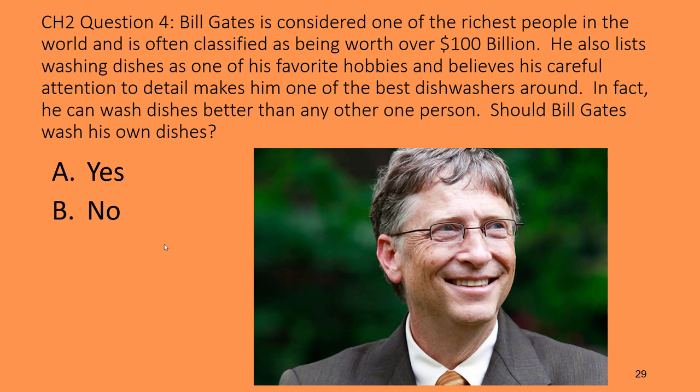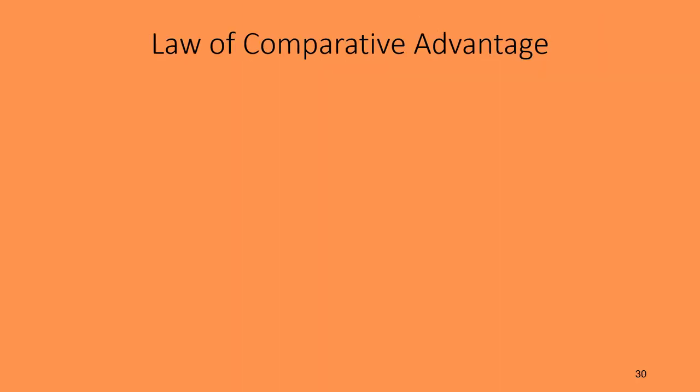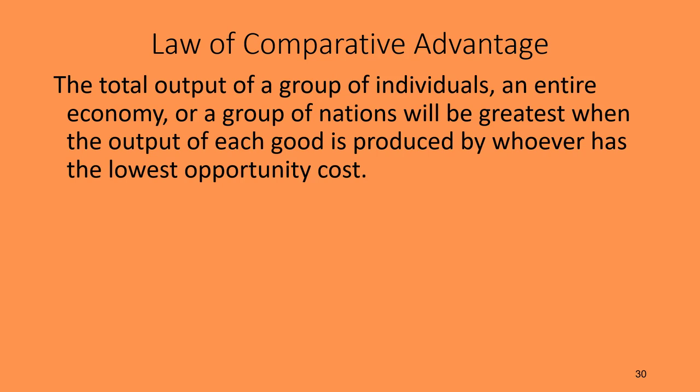If you said no because Bill Gates probably has better things to do with his time, then you already understand the next concept we're going to talk about: the Law of Comparative Advantage. It says that the total output of a group of individuals, an entire economy, or a group of nations will be greatest when the output of each good is produced by whoever has the lowest opportunity cost — not who can do it best, fastest, or who likes it most, but who can do it cheapest.